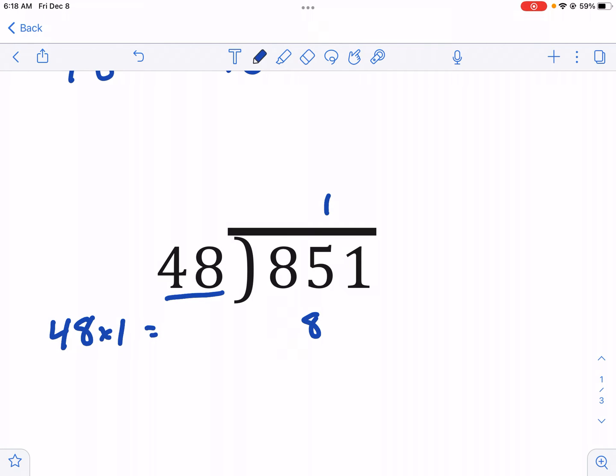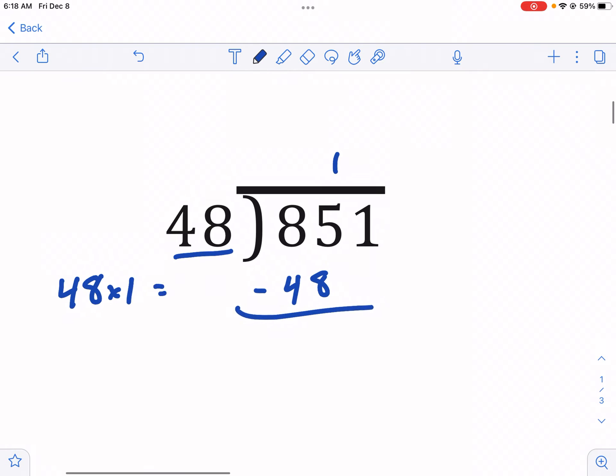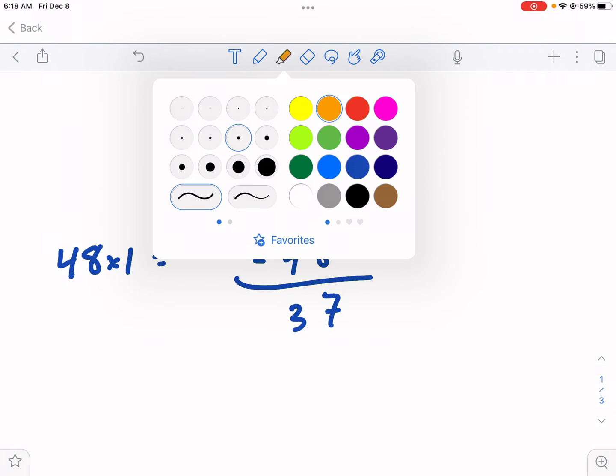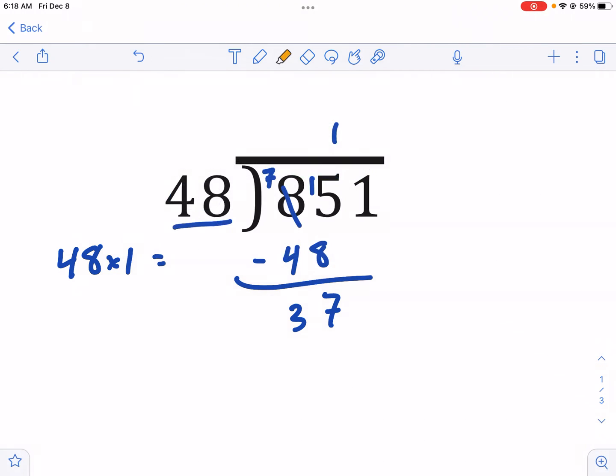So now we're going to subtract and we're going to see how much we have left over. We're going to do standard algorithm to subtract. So this is 7 because we need to borrow. This is going to be 7 and this is going to be 3. So now we have the number 37. By itself, it looks like 37 is too small. But we have this 1 here. So we have to incorporate both those numbers. What we do is we drop down the 1 and now we have the number 371.